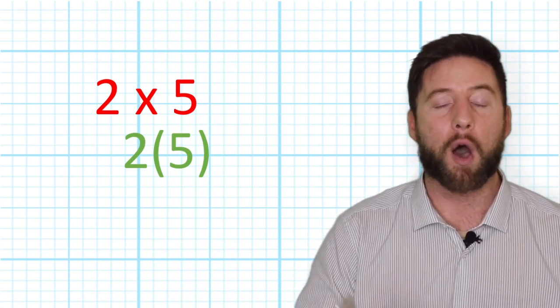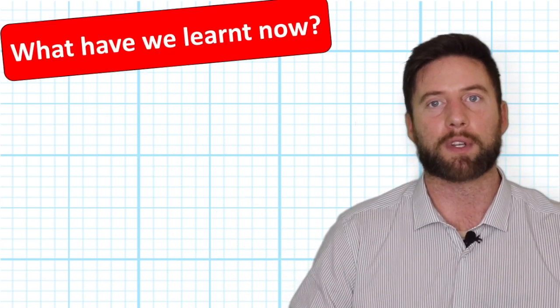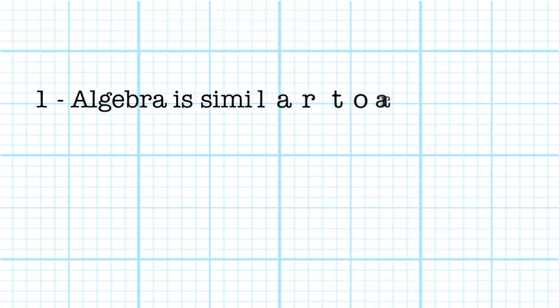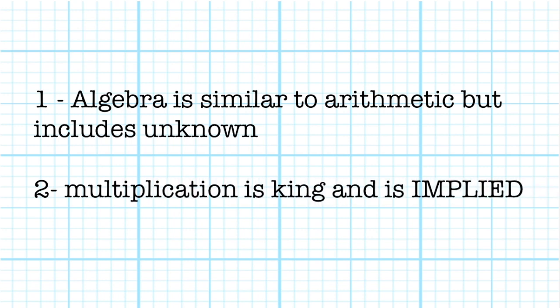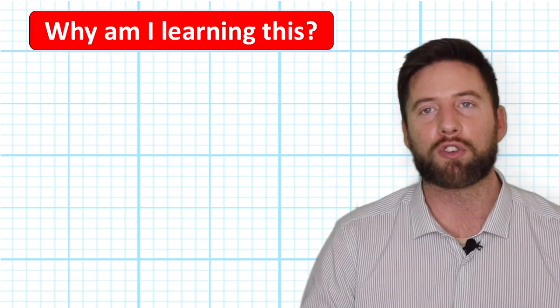So we have learned that algebra is very similar to arithmetic, but we have unknown values that we need to solve for. We've also learned that in algebra, the multiplication sign is king, and if there's no other sign there, we use that as our default. Now, I know what you're thinking: is algebra useful? Why am I learning this?